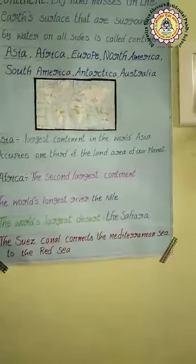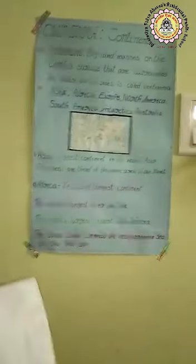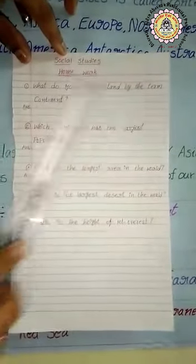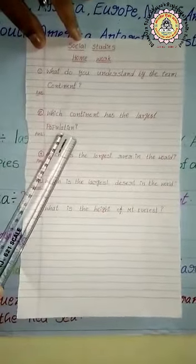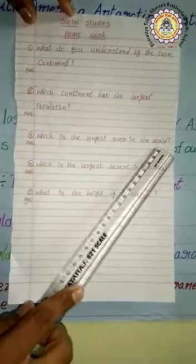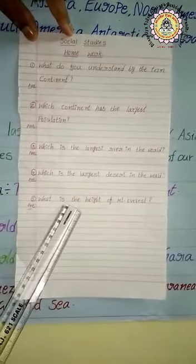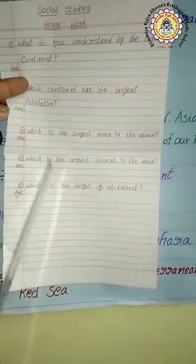Whatever topics you have learned today, I would like to give you a small homework which you have to complete at home. Here are the questions: First, what do you understand by the term continent? Second, which continent has the largest population? Third, which is the longest river in the world? Fourth, which is the largest desert in the world? Fifth, what is the height of Mount Everest? Please complete all five questions compulsory.